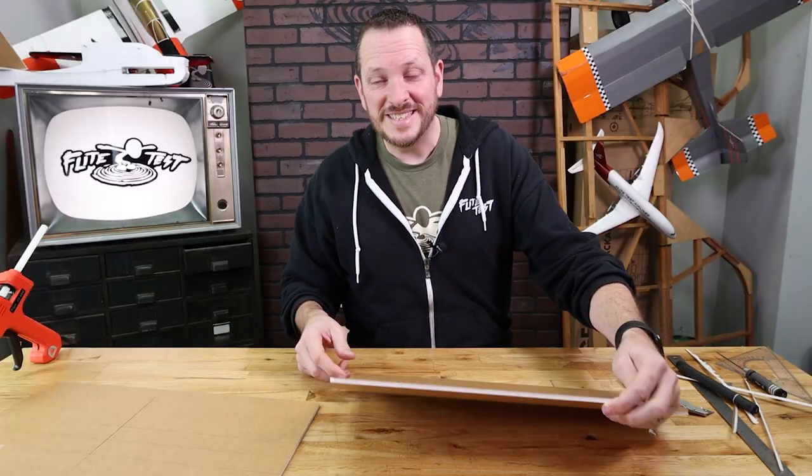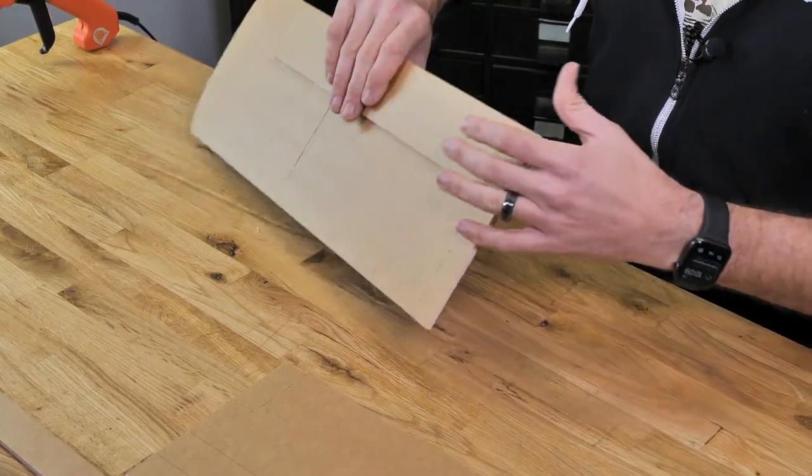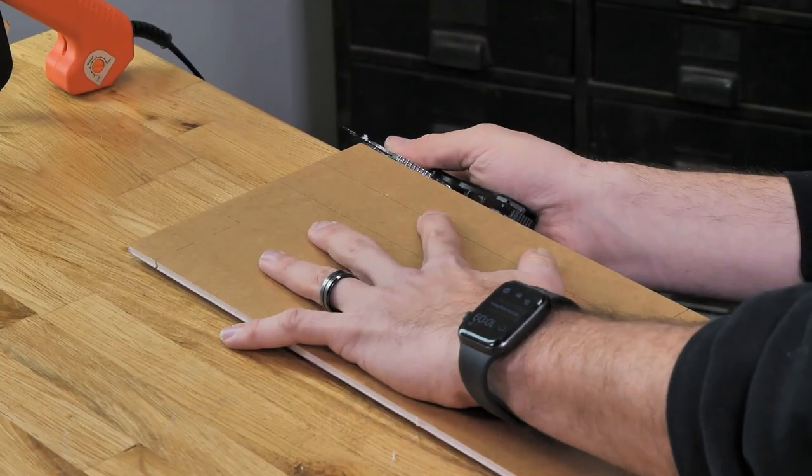Let's do the same process now on the other side. Fold over 180 degrees. I'll take this down to the table, keeping my blade just above the paper.